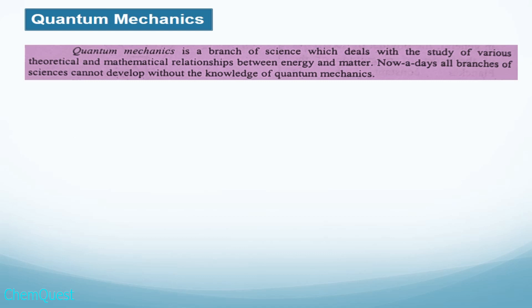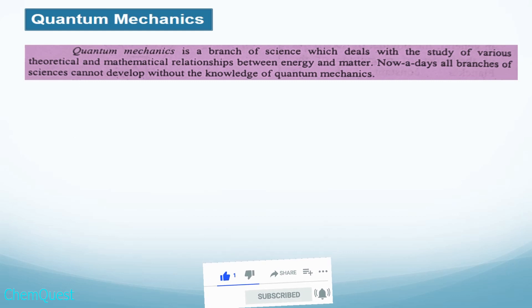What is quantum mechanics? Quantum mechanics is a branch of science which deals with the study of various theoretical and mathematical relationships between energy and matter. It is concerned with the phenomena that arise when electromagnetic radiation interacts with matter, and different mathematical relationships are used to understand these phenomena through different laws of quantum mechanics.